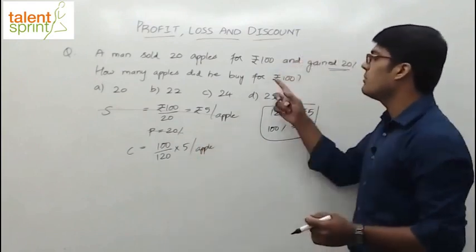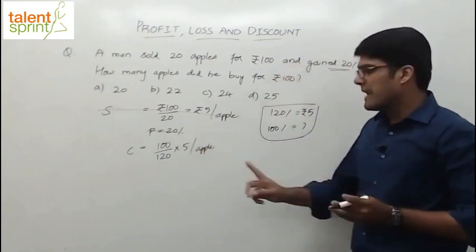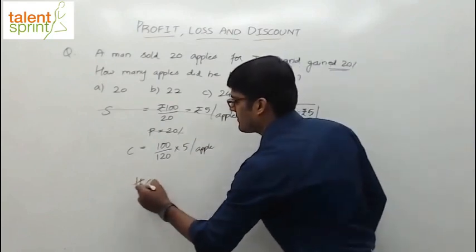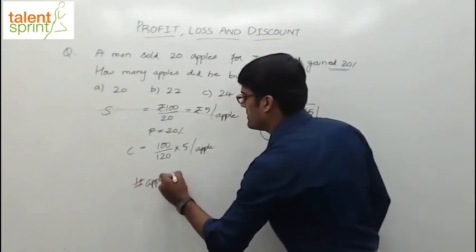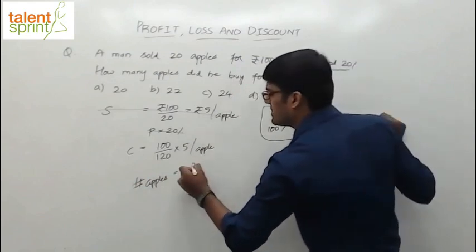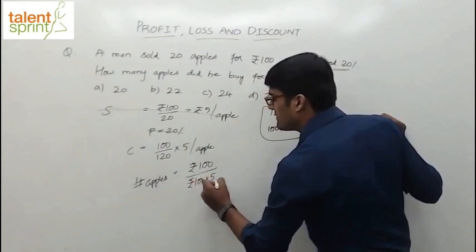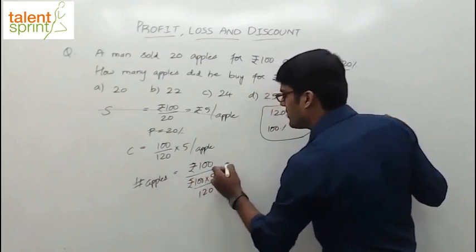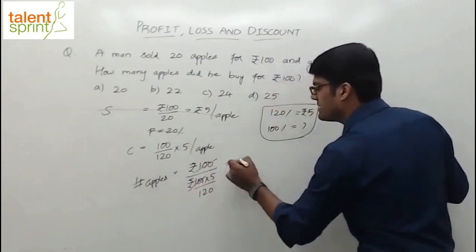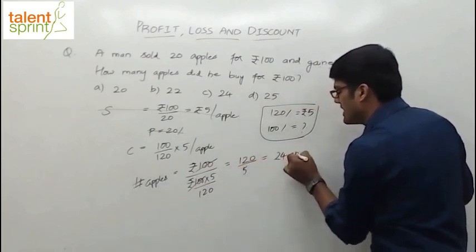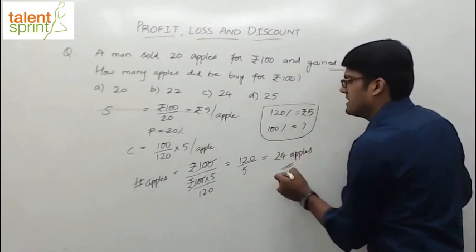Now how many apples can be bought for Rs.100? So when one apple costs this much, how many can be bought for Rs.100? So number of apples - how do you say number of apples will be equal to? Total cost is 100, 100 by per apple cost, which is 100 into 5 by 100. Simply find what happens. 100 and 100 gets cancelled. So this becomes 120 by 5. 120 by 5 is 24. The answer for this one will be 24 apples.